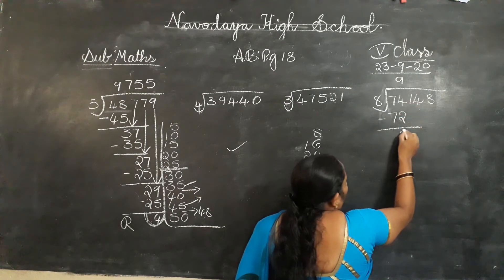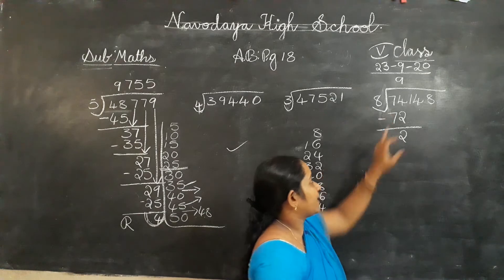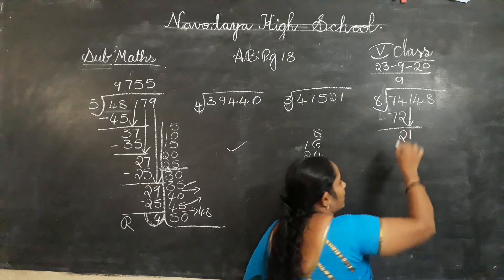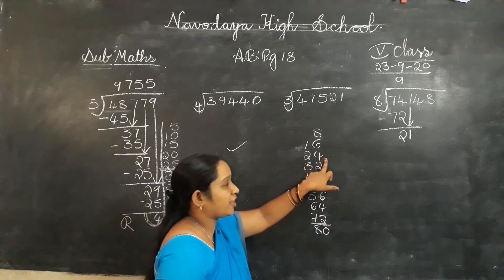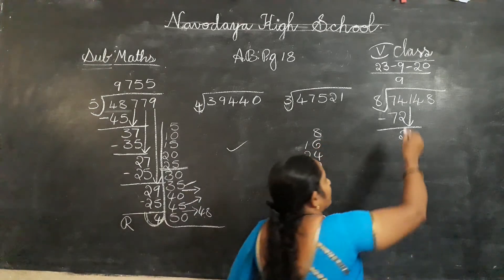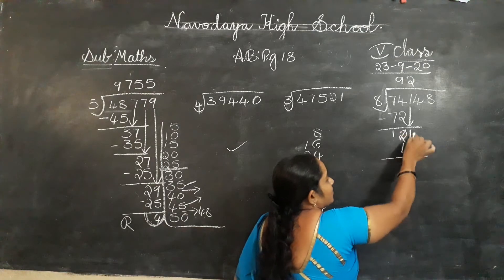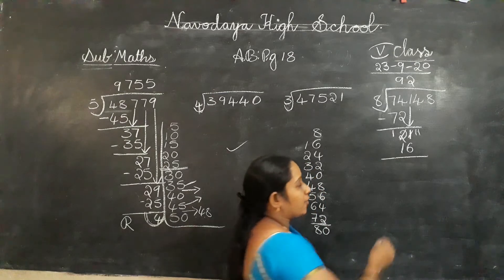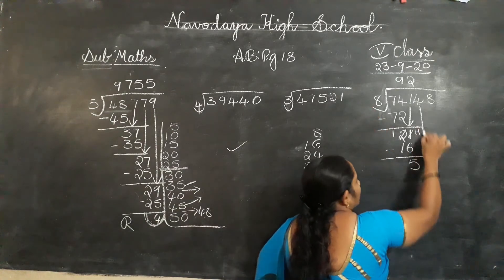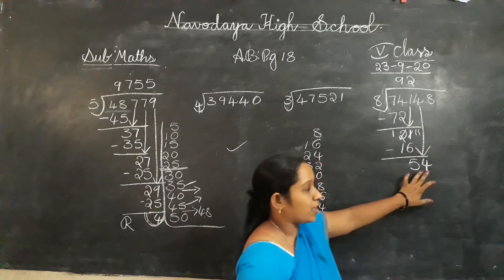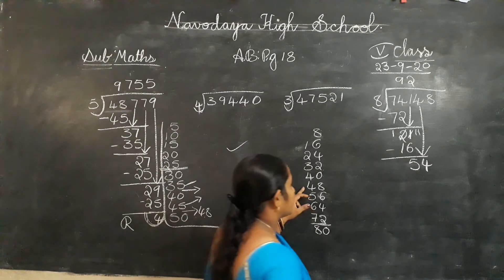Subtract: 4 minus 2 is 2, 7 minus 7 is 0 — no need to write 0 on the left side. 2 divided by 8 — not possible. Write down the next digit: 21. 21 divided by 8 — is 21 in the 8 table? No. Which is the smaller one — 16 or 24? 16. 8 twos are 16. Borrow: 2 becomes 1, 1 becomes 11. 11 minus 6 is 5, 1 minus 1 is 0. So 5 divided by 8 — not possible. Write down the next digit: 54. Is 54 in the 8 table? No. The suitable number is 48. 8 sixes are 48.